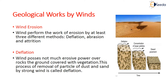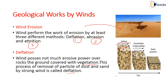Wind performs erosion by at least three different modes: deflation, abrasion, and attrition. In deflation, wind does not possess much erosive power over rocks covered with vegetation. Deflation is the process of removal of particles of dust and sand by strong wind. Over time this produces what is called desert pavement.